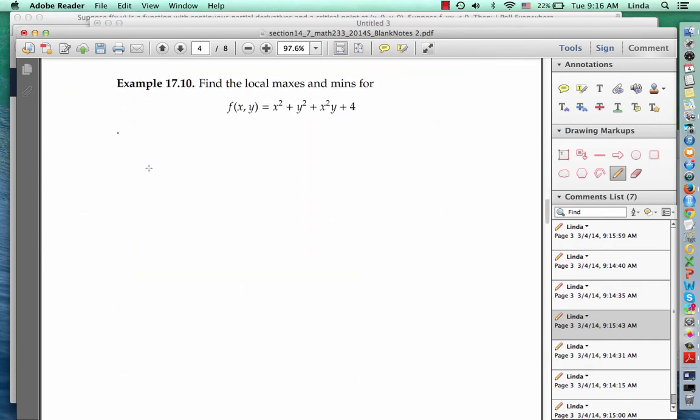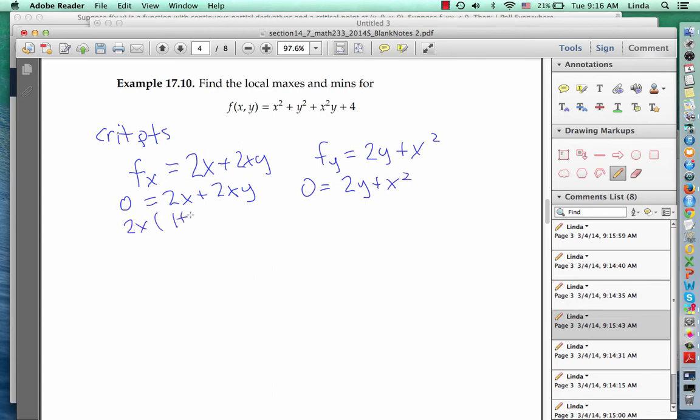For our first example, I'd like to find the local maxes and mins for the following function. Let's start by finding the critical points. f sub x is 2x plus 2xy, and f sub y is 2y plus x squared. Setting these both to 0, we can solve for x and y.